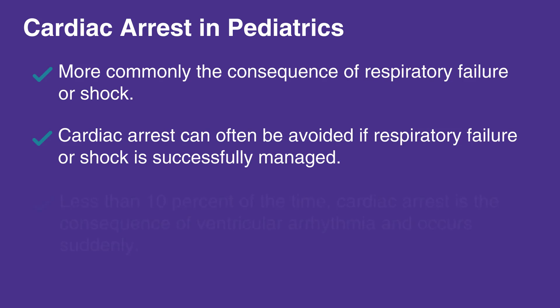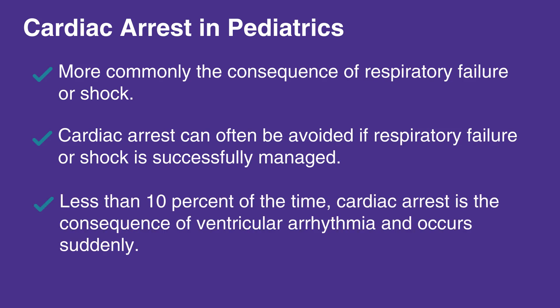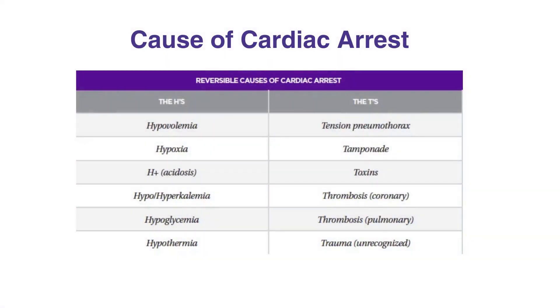Less than 10% of the time, cardiac arrest is a consequence of ventricular arrhythmia and occurs suddenly. It may be possible to identify a reversible cause of cardiac arrest and treat it quickly. The reversible causes are essentially the same in children and in infants as they are in adults, and are divided into the H's and the T's.